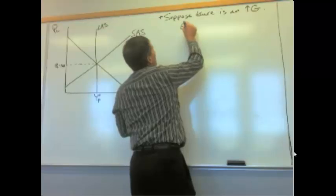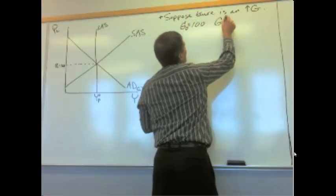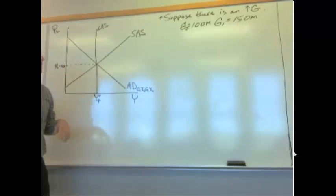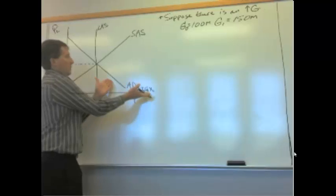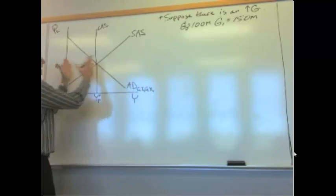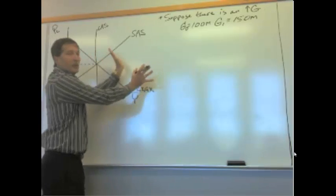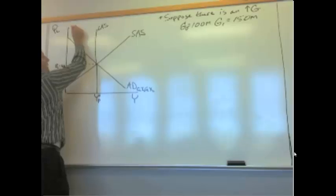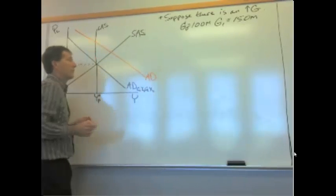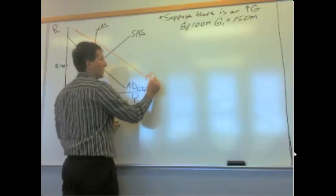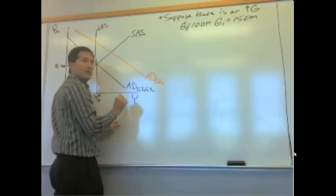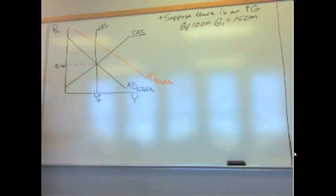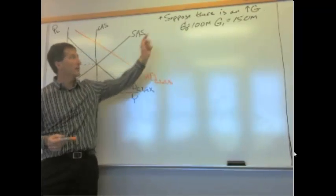Now I shocked the system. So we're saying maybe government spending was 100 million on weapons, and now G1 is 150 million on weapons. So government spending went up. We've changed one of these things. So at each level of the price level, holding other things constant, that's going to relocate the aggregate demand curve to the right. So aggregate demand shifts. And this aggregate demand curve has the old level of consumption, the old level of investment, the new level of government spending, and the old level of net exports. So the only thing we've changed is that the government's now buying more weapons.